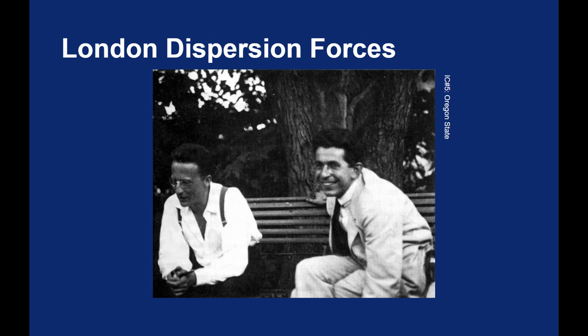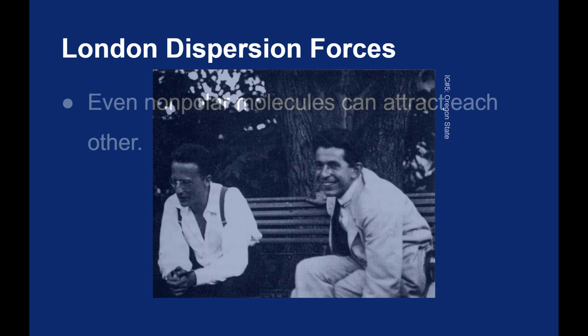What Fritz London did was give us a better look into what van der Waals was discussing. We discussed van der Waals forces earlier when we were talking about ideal gases and real gases. Van der Waals corrected the ideal gas law to show the real behavior of gases. What Fritz London did was he described why real gases deviated from the ideal gas laws. Why is it that gas particles would attract each other? London dispersion forces can cause even non-polar molecules to attract each other. They do this by inducing a dipole. They can make things that aren't polar on themselves become polar.